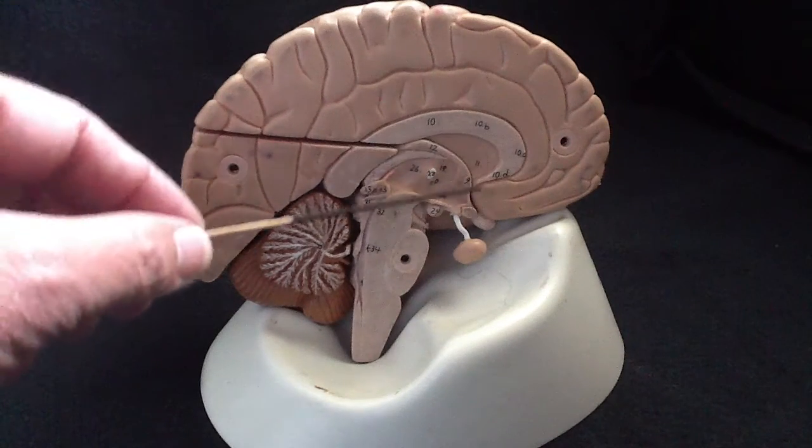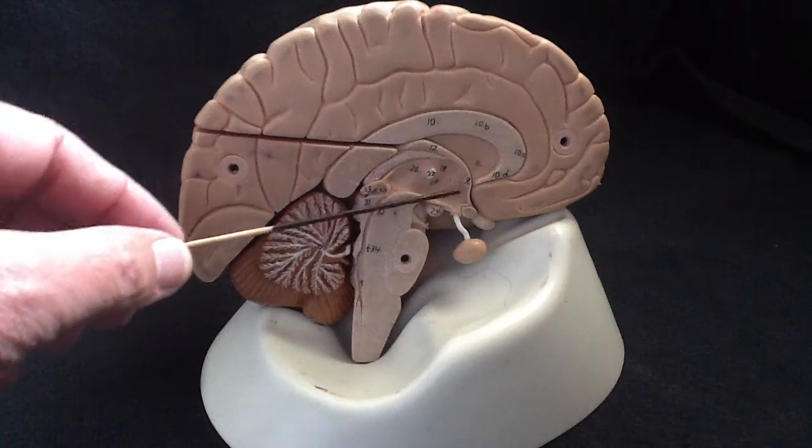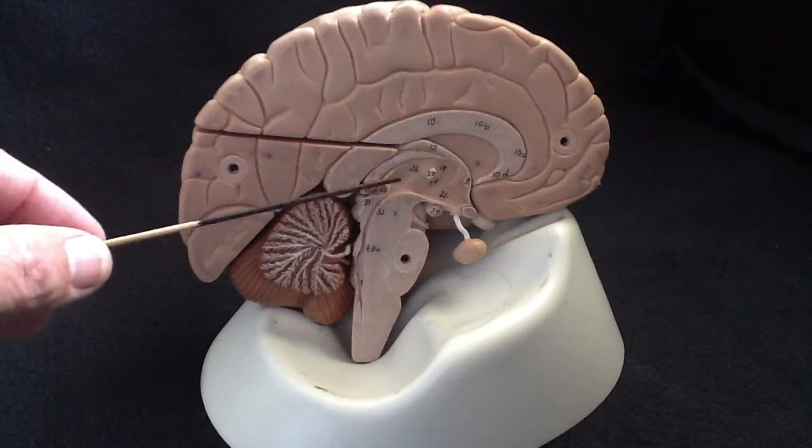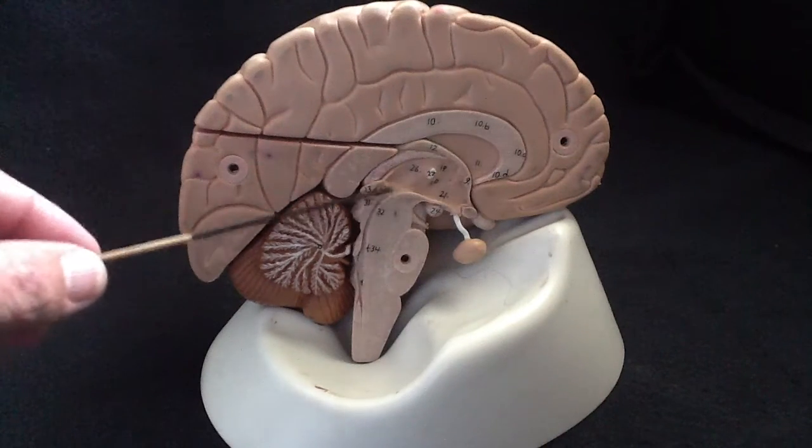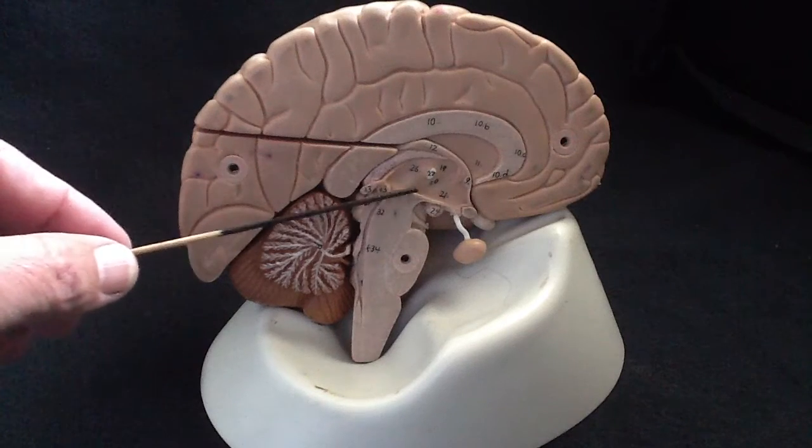The typical identification for the diencephalon is in a mid-sagittal section, as you see here, and it's usually indicated in this area.